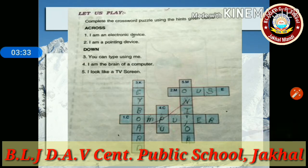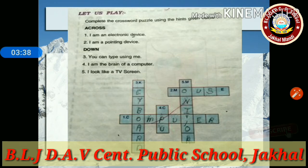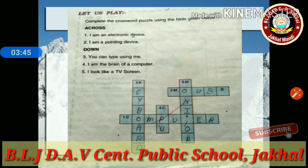Complete the crossword puzzle using the hints given below. Across: I am an electronic device. What is an electronic device? For example, this is a computer. I will do the first one for you; next you have to do yourself.